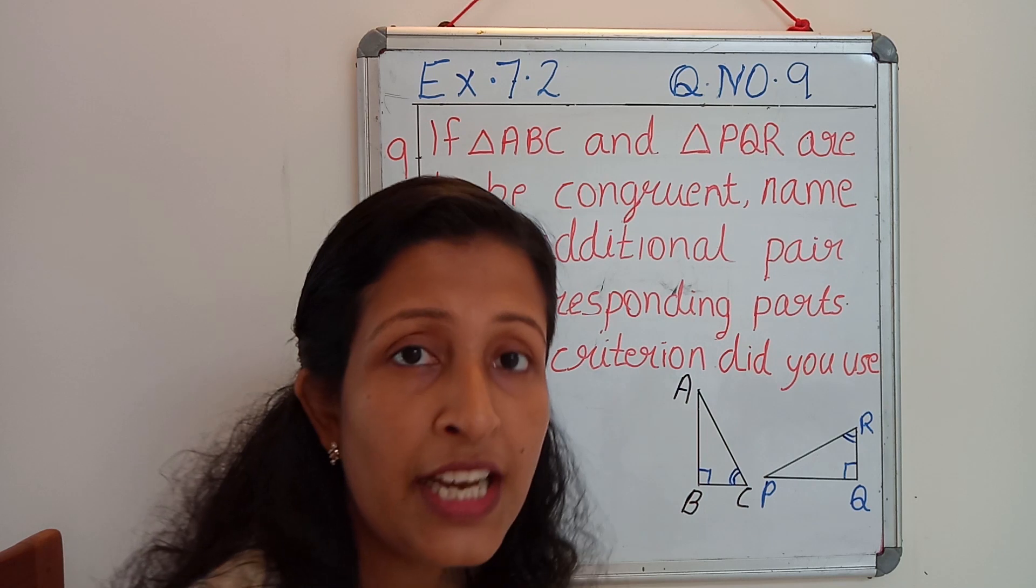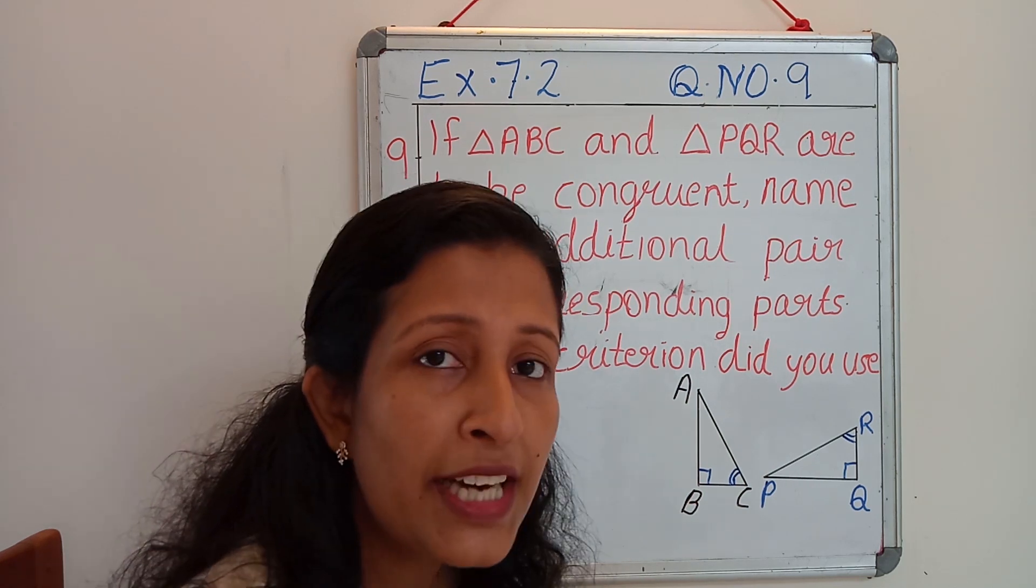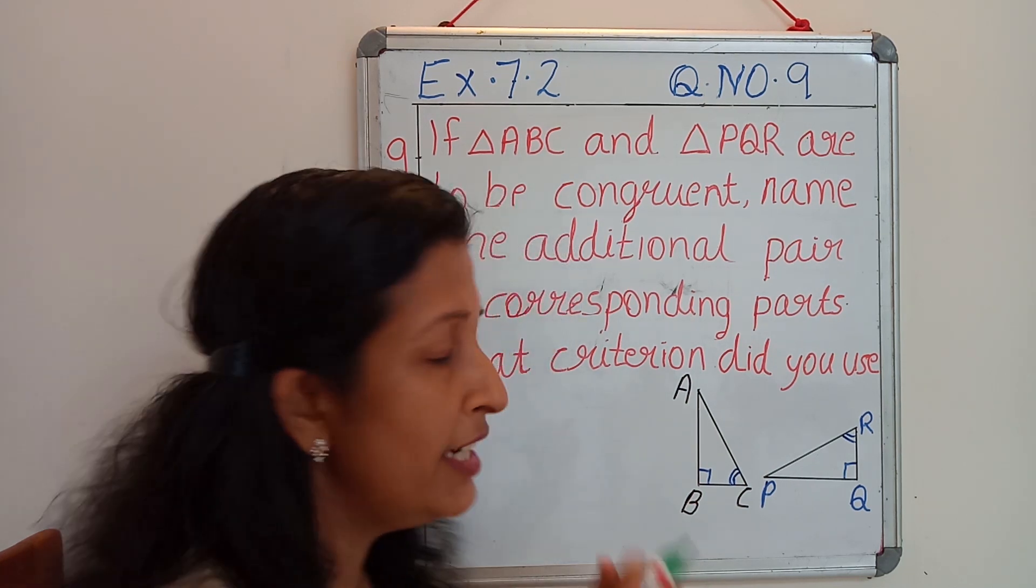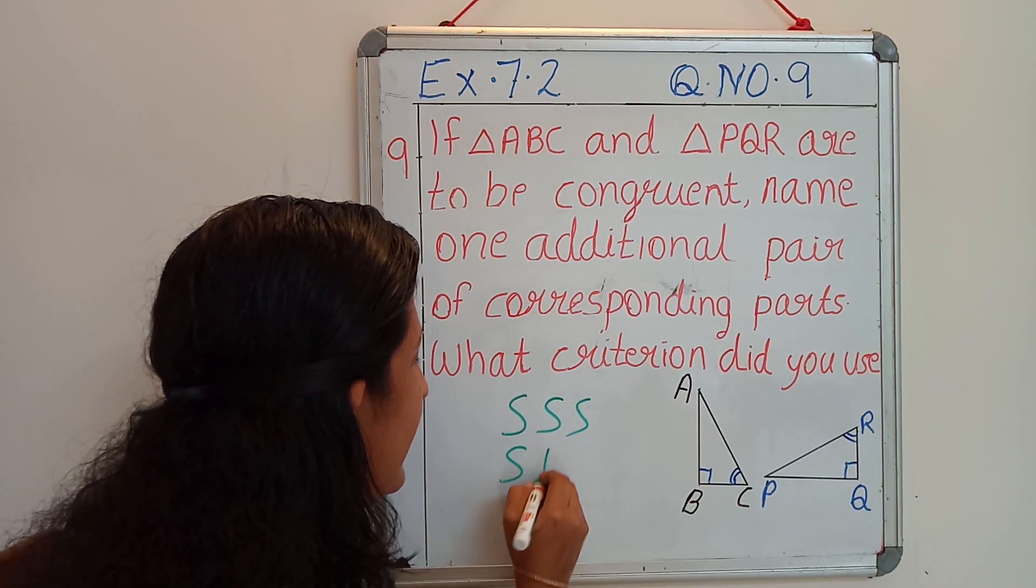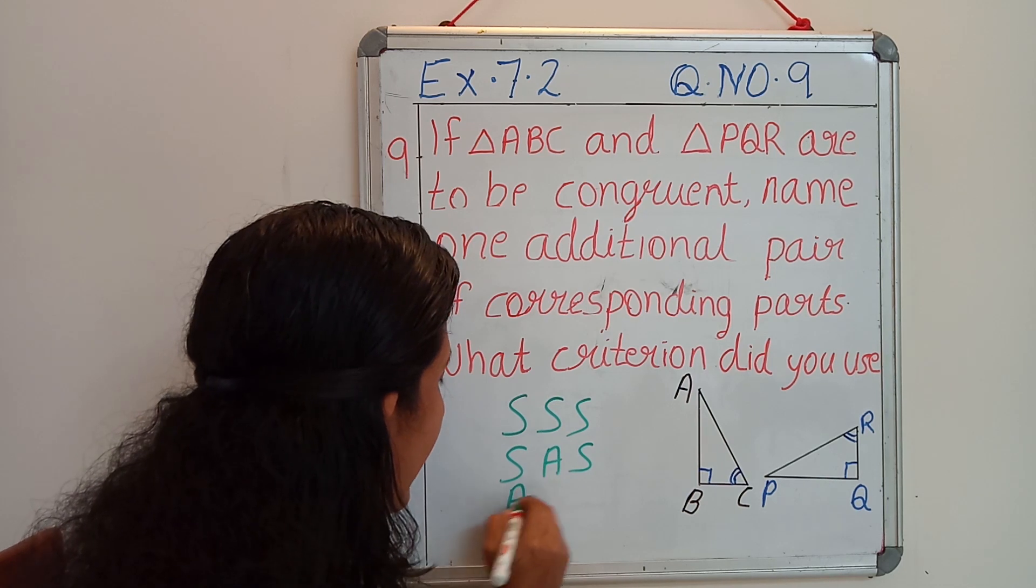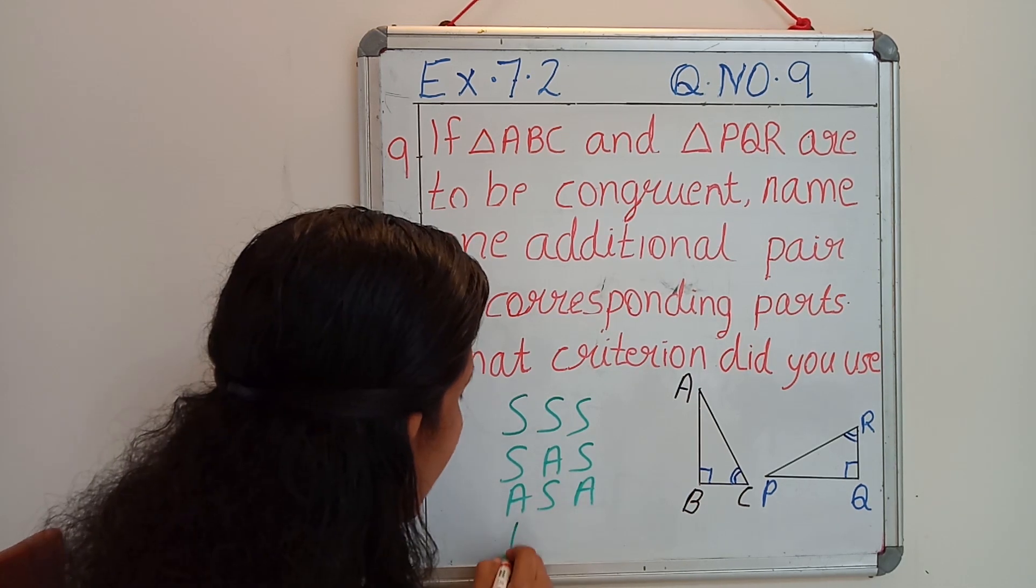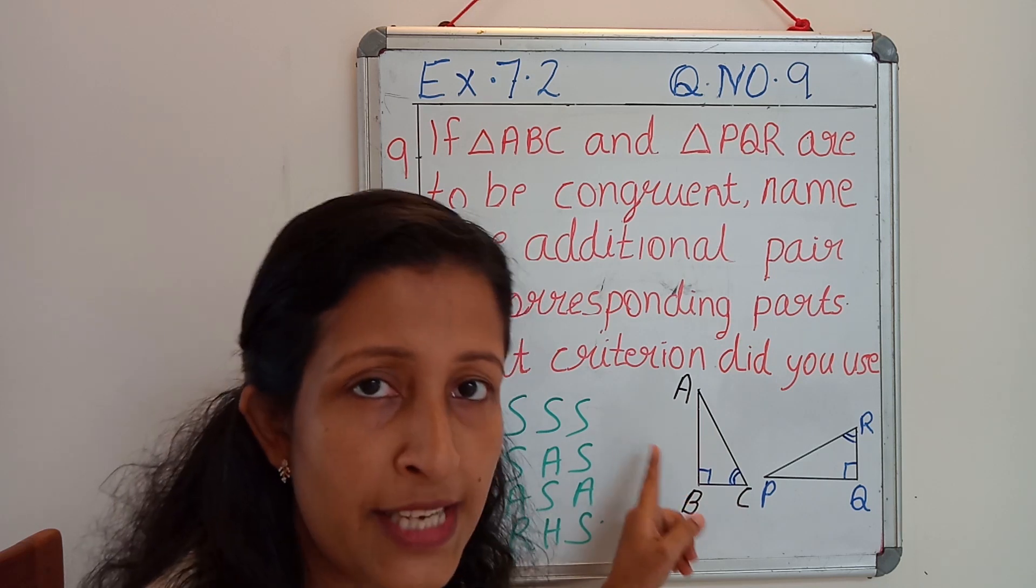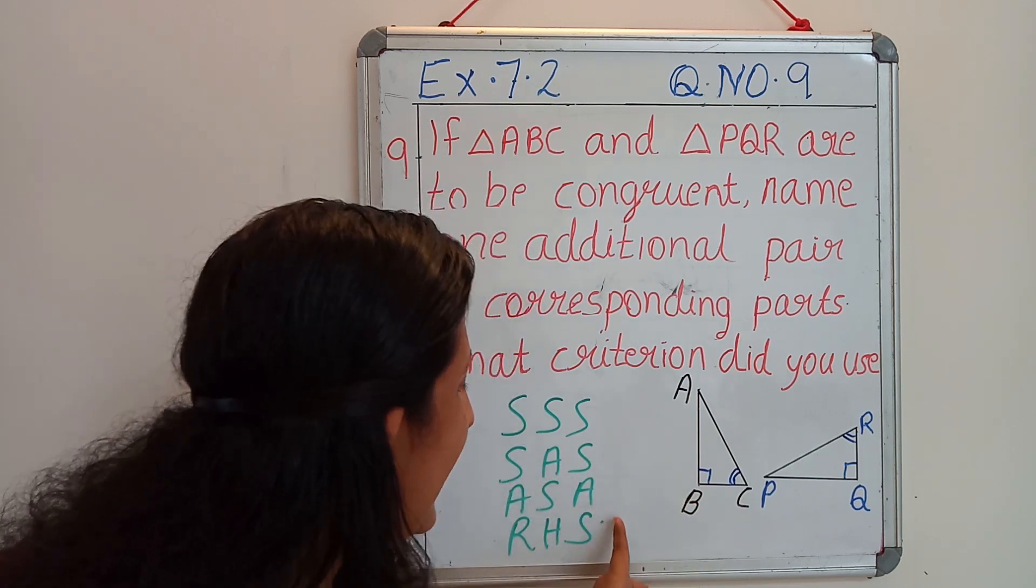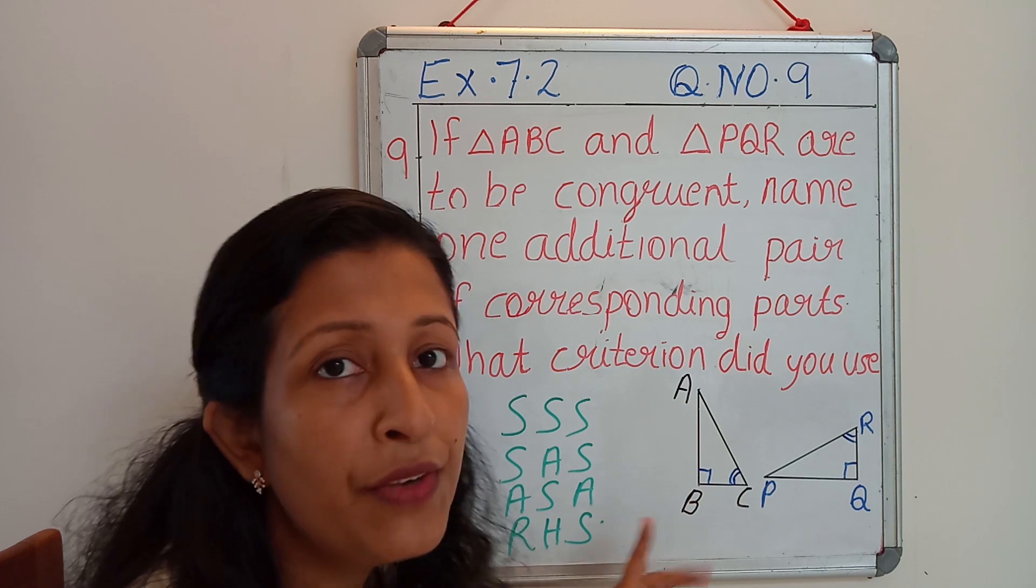Whatever criteria we are using, how many criterions we have studied? Four criteria: SSS, SAS, ASA, and the last one, RHS. If we are proving the congruency of triangles by using any one of these criteria, we want three data.